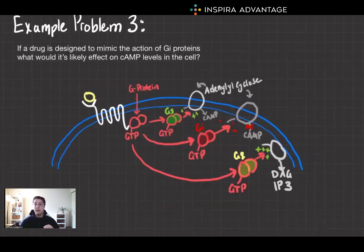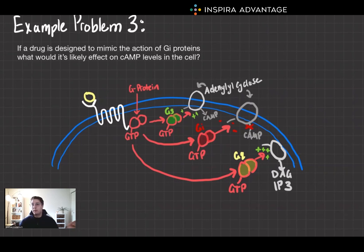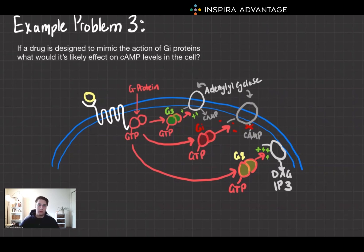Now onto the final problem for today. If a drug is designed to mimic the action of Gi proteins, what would be its likely effect on cyclic AMP levels in the cell? Well, this drug would reduce cyclic AMP levels, as Gi proteins inhibit cyclic AMP production.